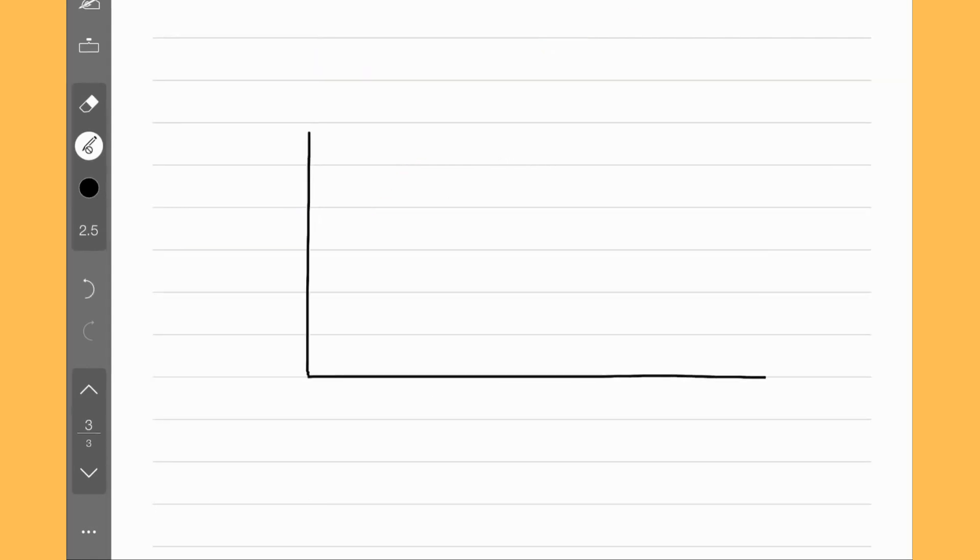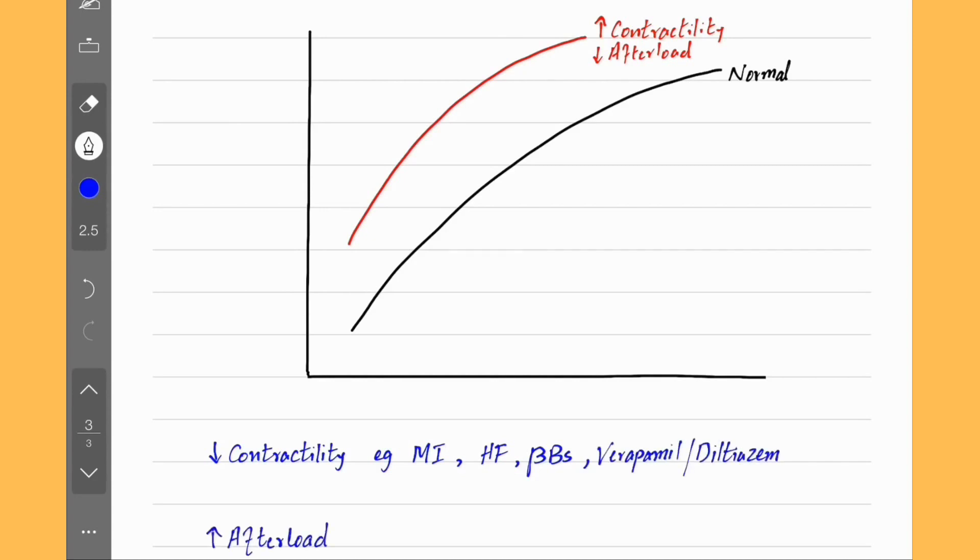Let's draw the curve one more time to see what happens if we change things the other way around. For example, decreasing contractility seen in myocardial infarction or heart failure or when using beta blockers and the calcium channel blockers verapamil, diltiazem, or increasing the afterload such as in hypertension or aortic stenosis. These two changes shift the curve down.